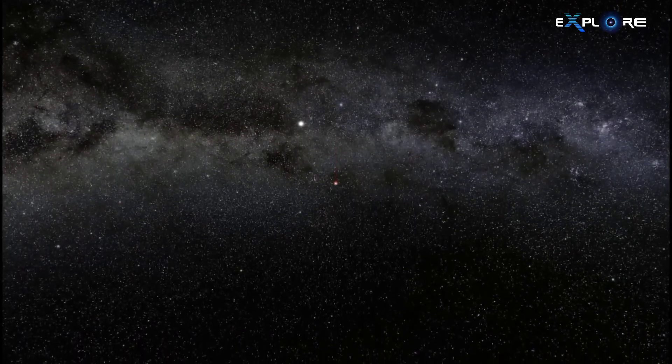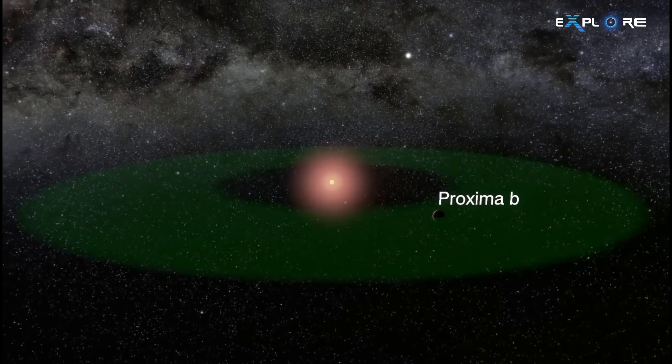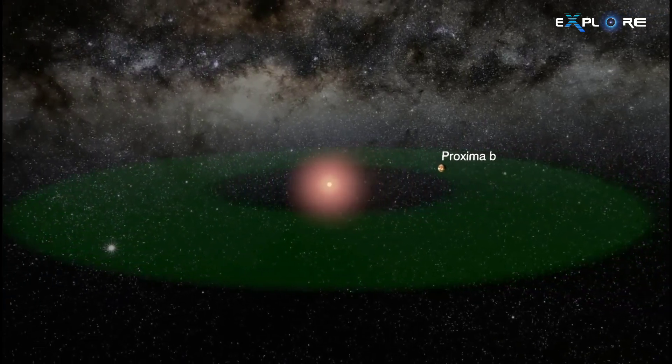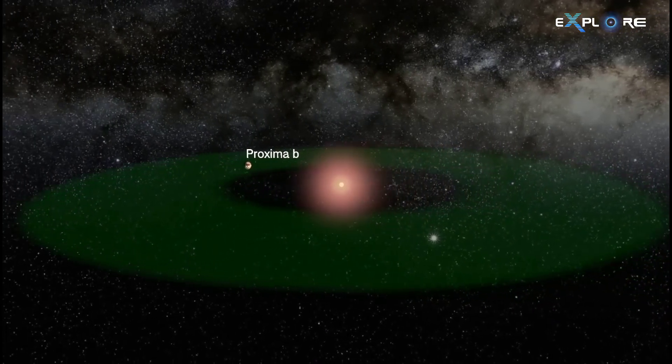Proxima Centauri isn't alone. It has planets in its orbit, and one of them is Proxima B. We discovered Proxima B in 2016. It offers exciting possibilities, but its location and characteristics set it apart from Earth.